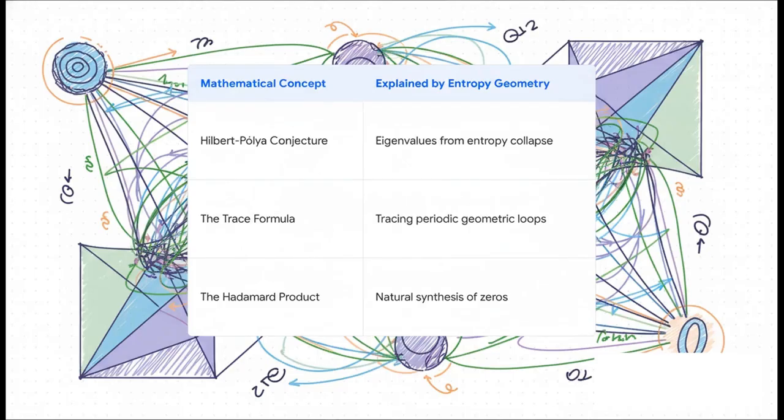Now, for a theory this big, this bold, it can't just exist on its own, right? It has to connect with what we already know. And this is where things get really compelling. For decades, other mathematicians have had their own ideas—like the Hilbert-Pólya conjecture, which guessed the zeros might be like energy levels in a quantum system. What these researchers claim is that their entropy geometry doesn't just agree with these other ideas; it provides a single unified framework that explains all of them naturally.